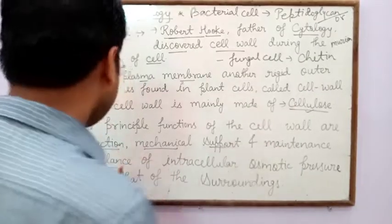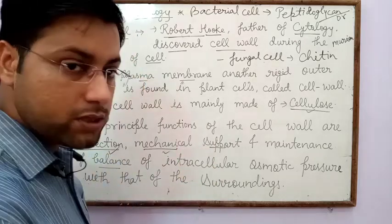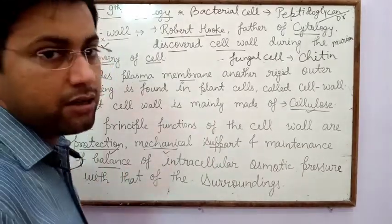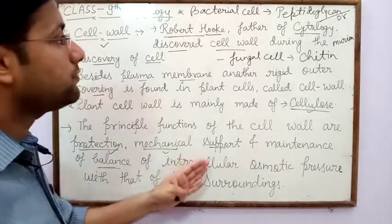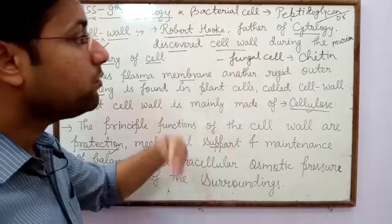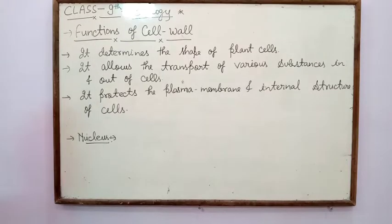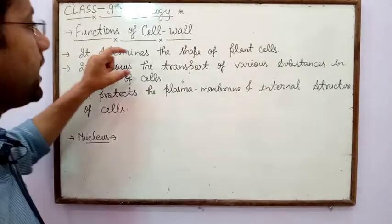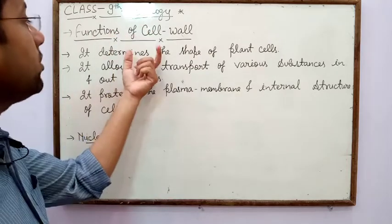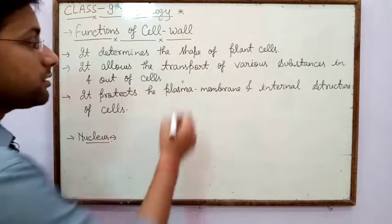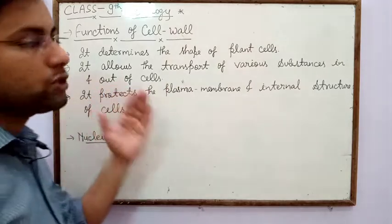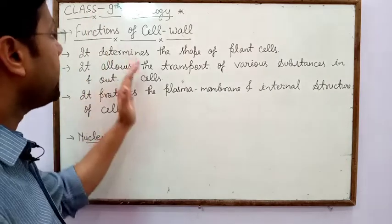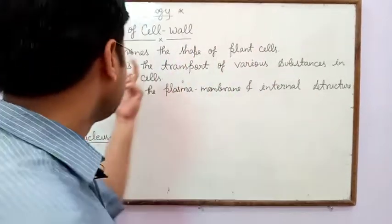The principal functions of cell wall are: first, protection; second, mechanical support; and third, maintenance of balance of intracellular osmotic pressure with that of the surrounding. Cell wall is an outer protective covering of the plant cell, bacterial cell, and fungal cell. The main function of cell wall is protection of the cell from outer injury. It also determines the shape of the plant cell, and allows the transport of various substances in and out of the cell.